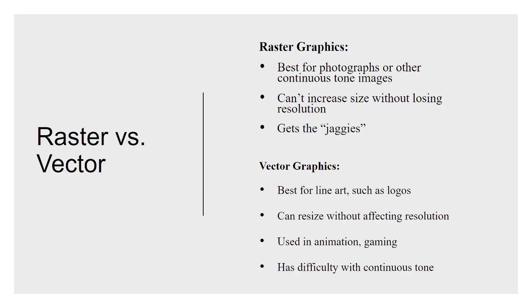Raster graphics are good for things that have pixels — continuous tone images like photographs. The problem is that raster is resolution dependent, so we have limitations on how much we can scale it up. If we make a raster graphic bigger, we have to add more pixels and those pixels have to come from somewhere. Photoshop is going to guess, and as long as we're not scaling too much it does a pretty good job, but at some point we'll get degraded image quality because pulling pixels out of thin air based on available information only goes so far.